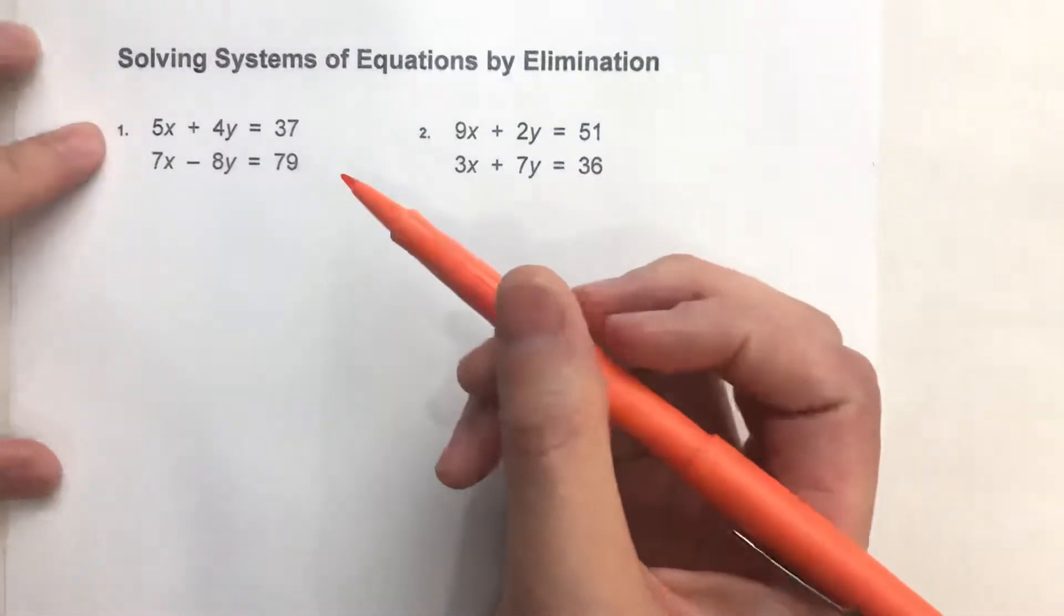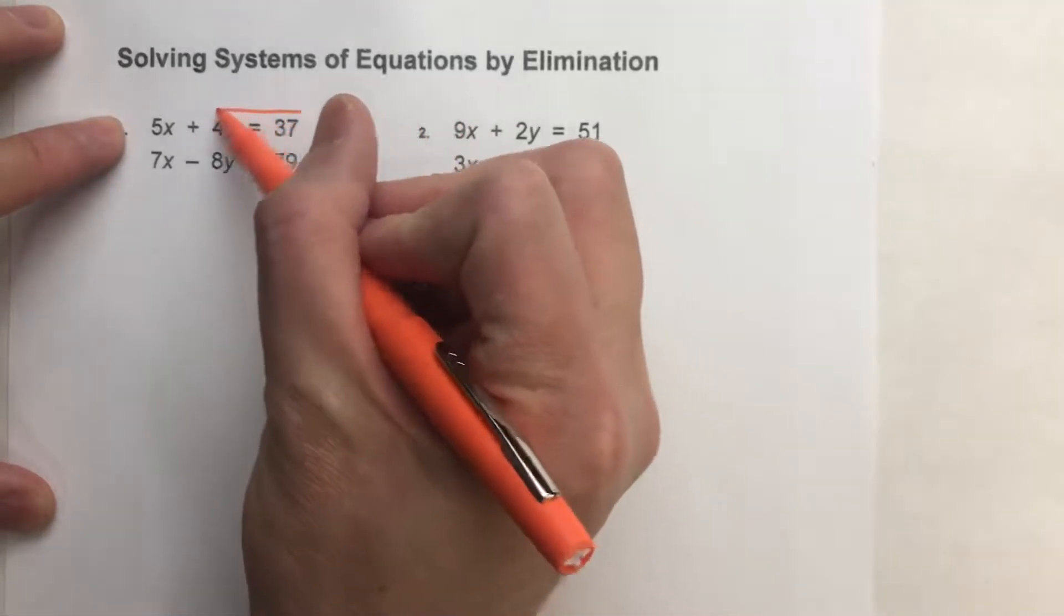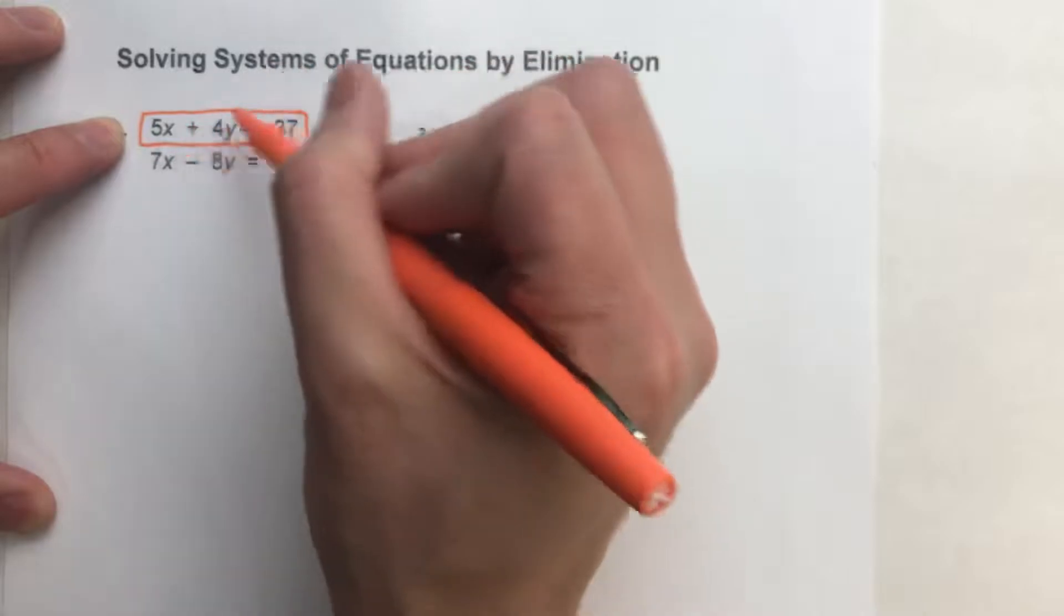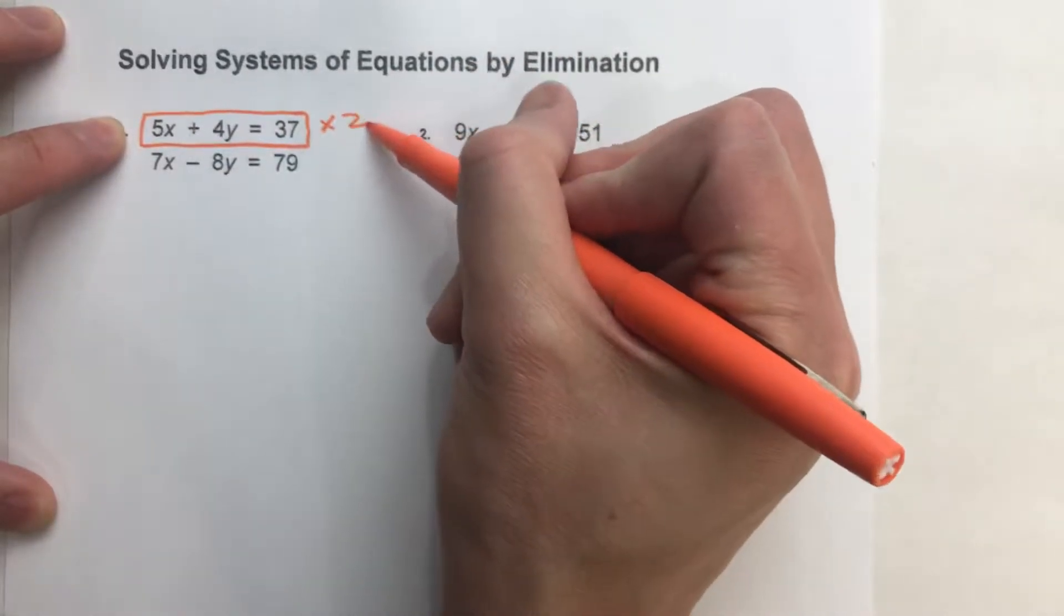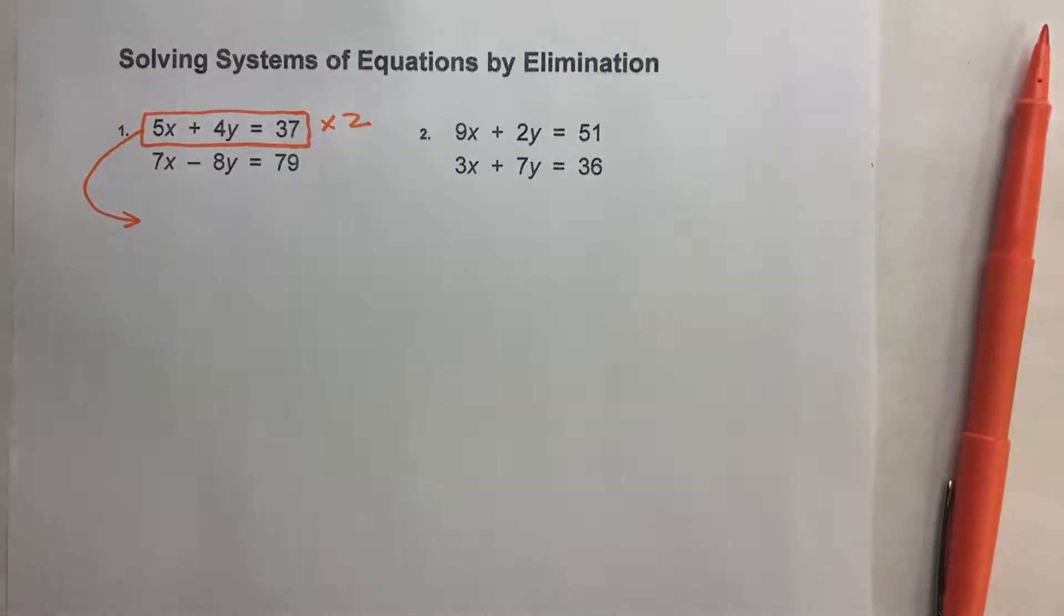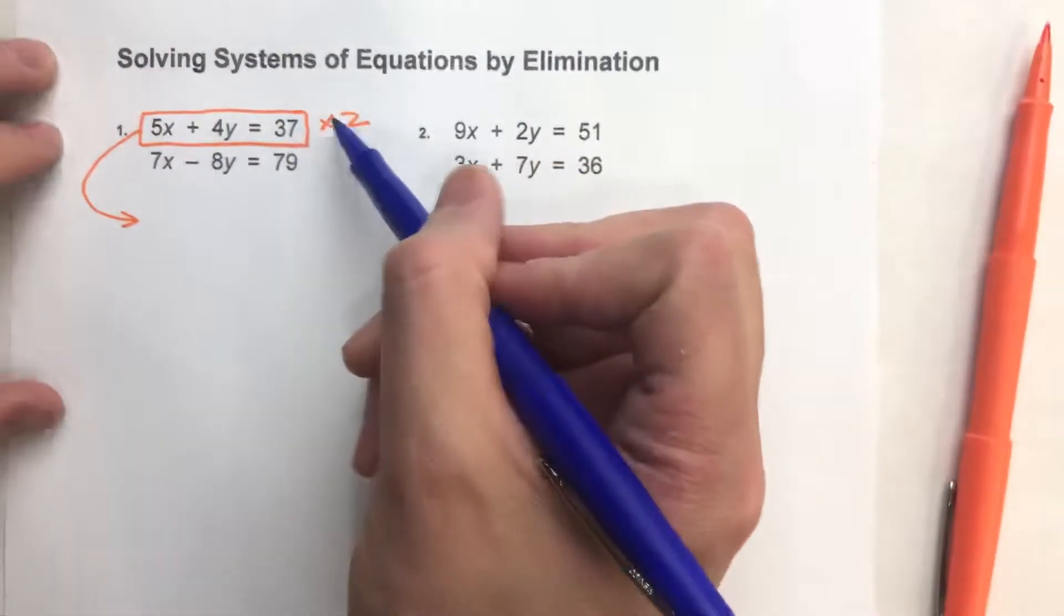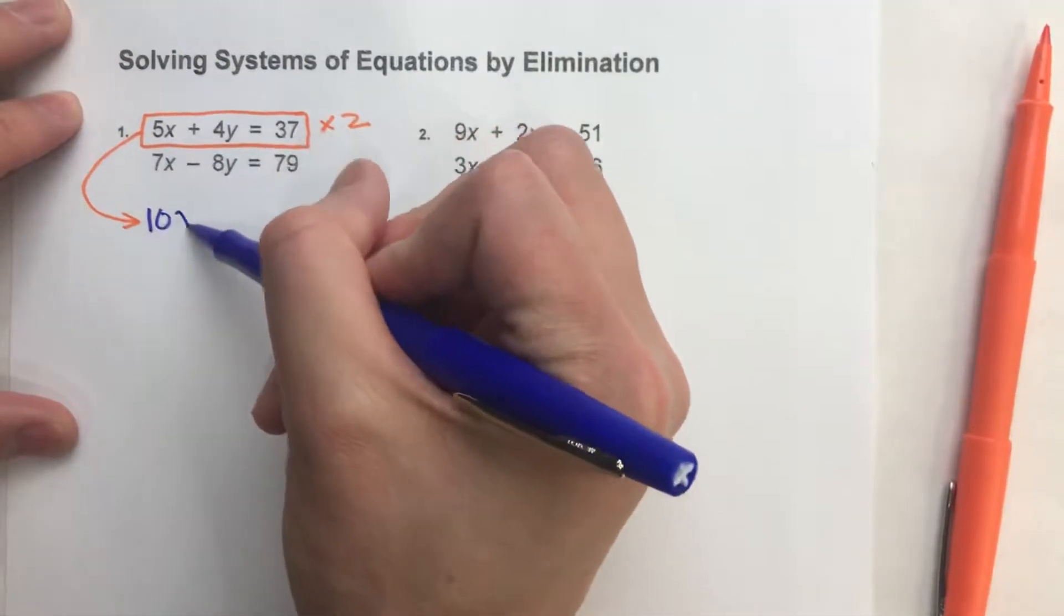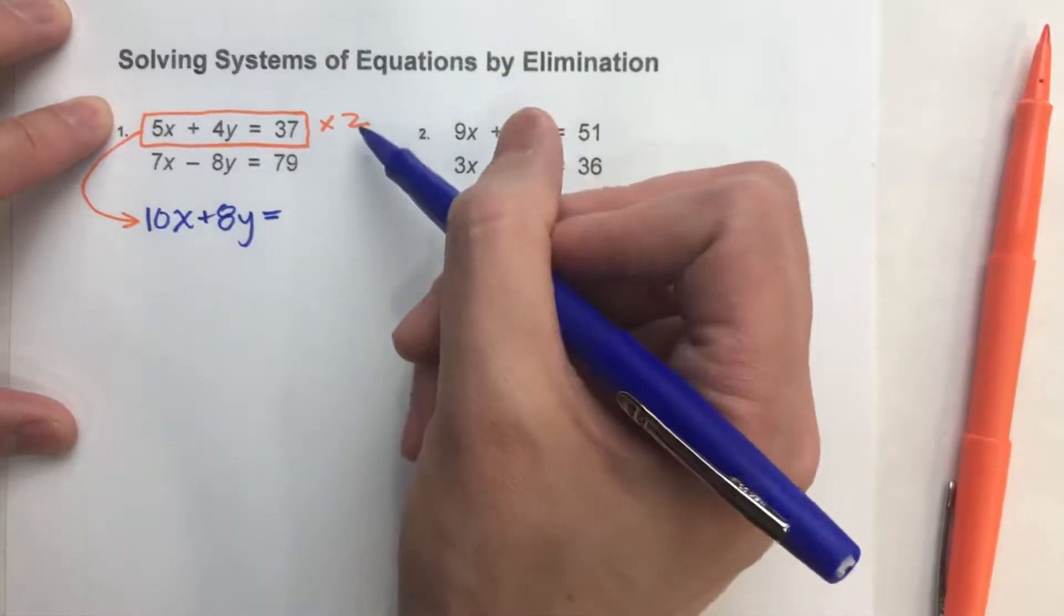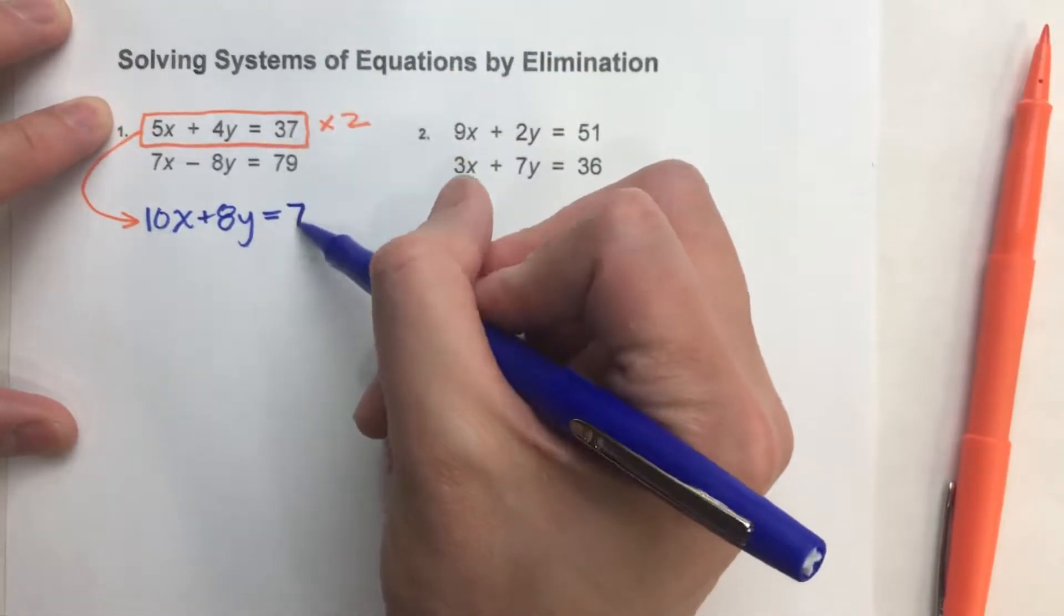So I'll show you what I mean. I'm going to take this first equation and I'm going to multiply both sides of the equal sign by 2. Now, why 2, you ask? Well, you're about to find out. 2 times 5x is 10x. 2 times 4y is 8y. And 2 times 37 is 74.